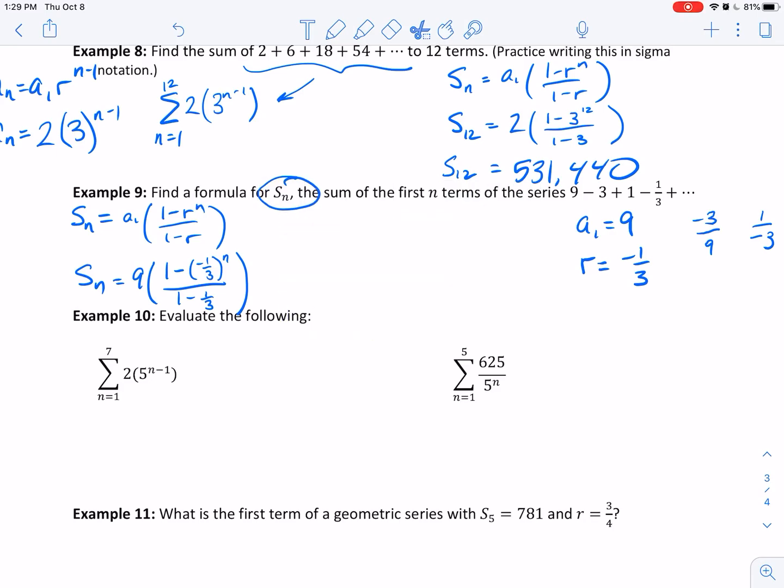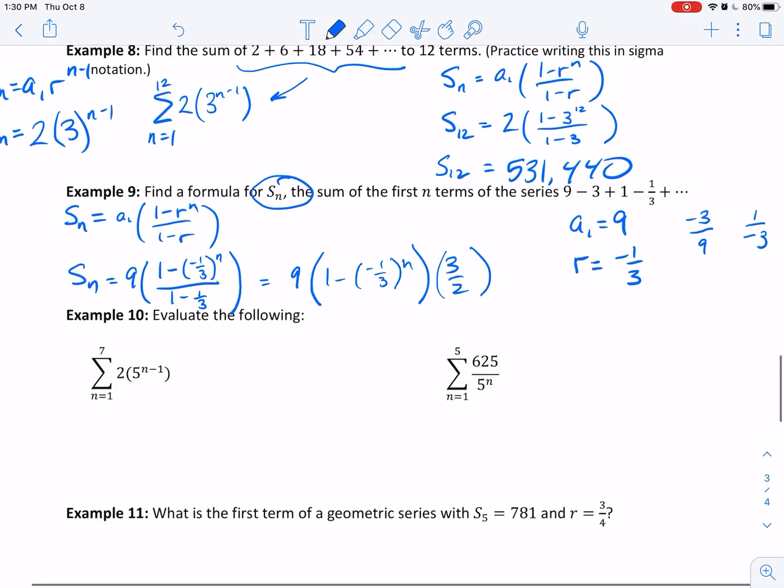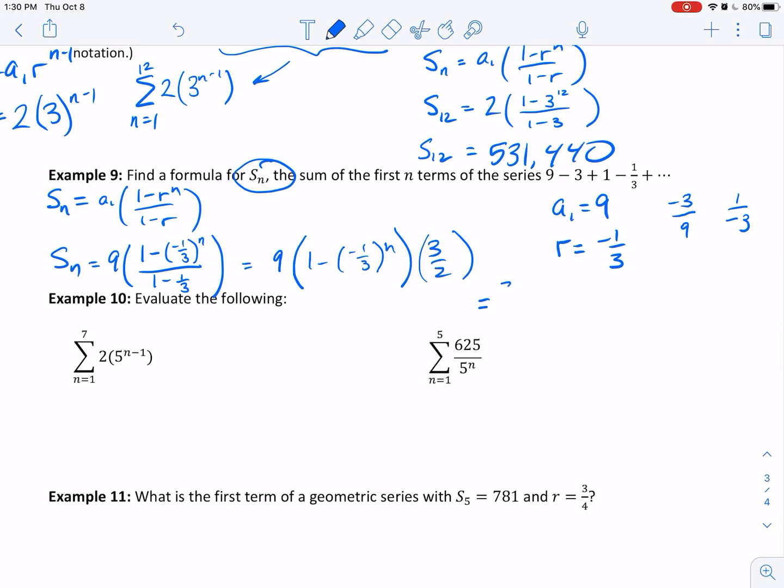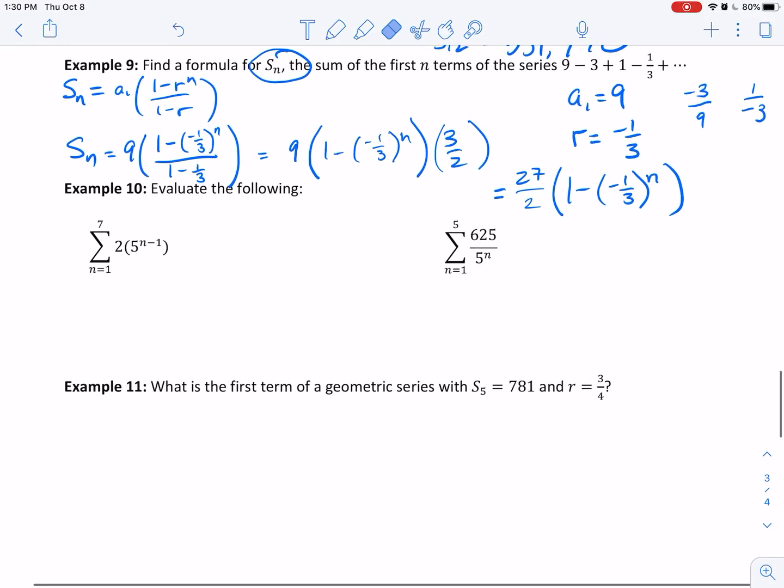We can clean some of the rest of this up. 1 minus 1 third is 2 thirds, so this equals 9 times 1 minus negative 1 third to the n, divided by 2 thirds, so times 3 halves. We could say 27 over 2 times 1 minus negative 1 third to the n. I think that's as good as we can get it because we can't change this sign since we don't know if this part is going to be positive or negative. It'll go back and forth depending on even or odd. That, I think, is our answer.